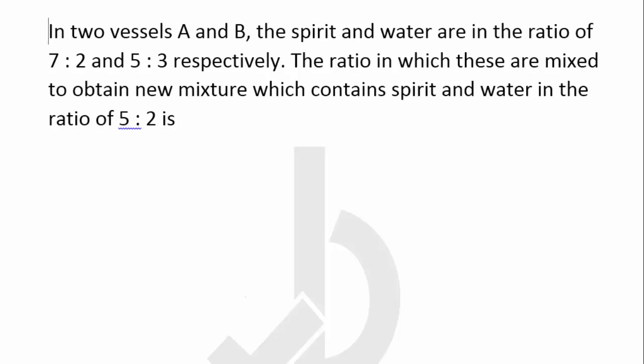In this, it is said that there are two vessels A and B which contain spirit and water in the ratio of 7:2 and 5:3 respectively. To what ratio this has to be mixed to obtain a new mixture which is having spirit and water in the ratio of 5:2?